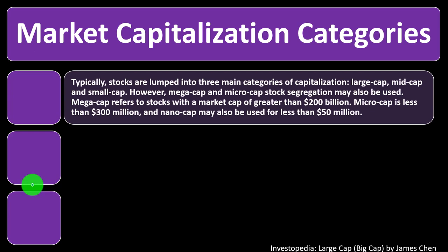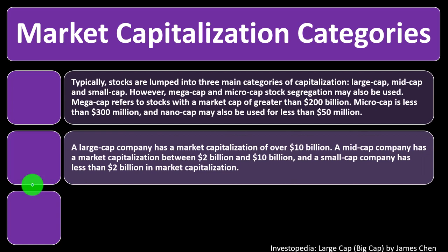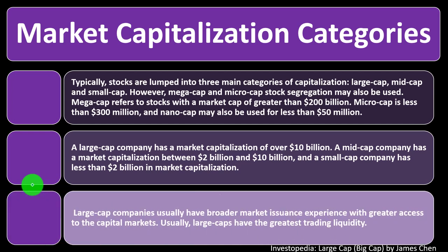Market capitalization categories: stocks are typically lumped into three main categories — large cap, mid cap, and small cap. However, mega cap and micro cap segregations may also be used. Mega cap refers to stocks with a market cap greater than $200 billion. Micro cap is less than $300 million, and nano cap may be used for less than $50 million. A large cap company has a market capitalization over $10 billion, mid cap is between $2 billion and $10 billion, and small cap is less than $2 billion.